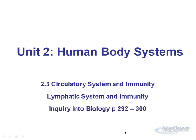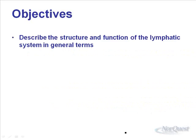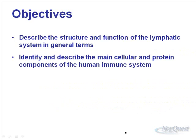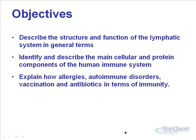In your textbook, it's pages 292 to 300. By the end of this lecture, you'll be able to describe the structure and function of the lymphatic system in general terms. You'll be able to identify and describe the main cellular and protein components of the human immune system. You'll be able to explain allergies, autoimmune disorders, vaccination, and antibiotics in terms of immunity.